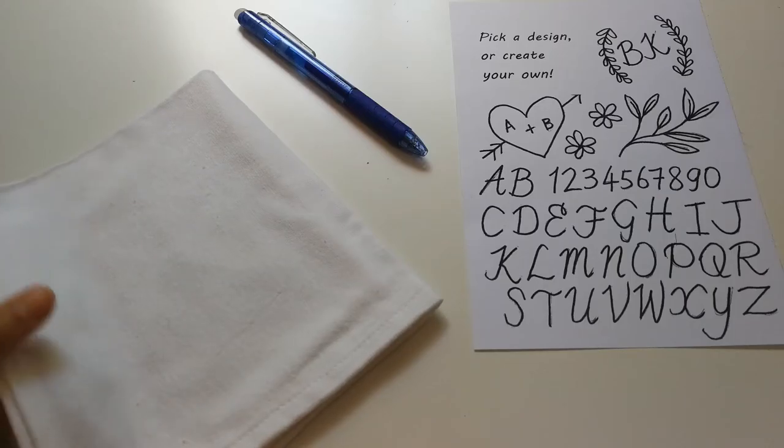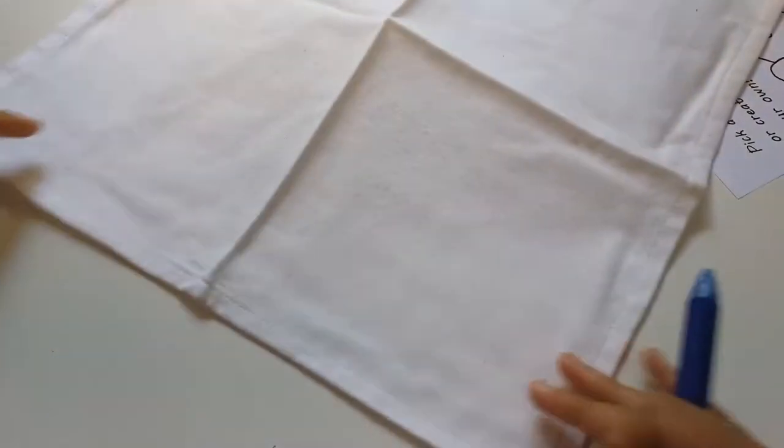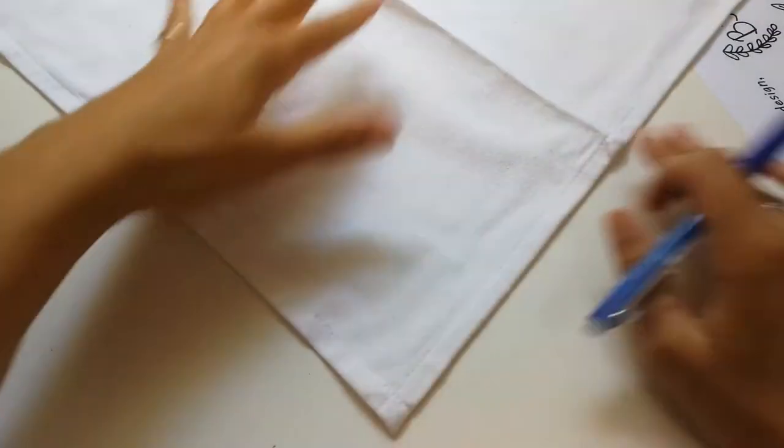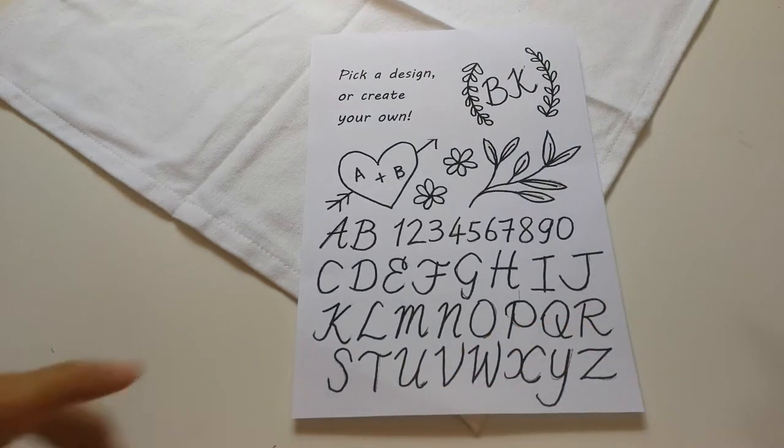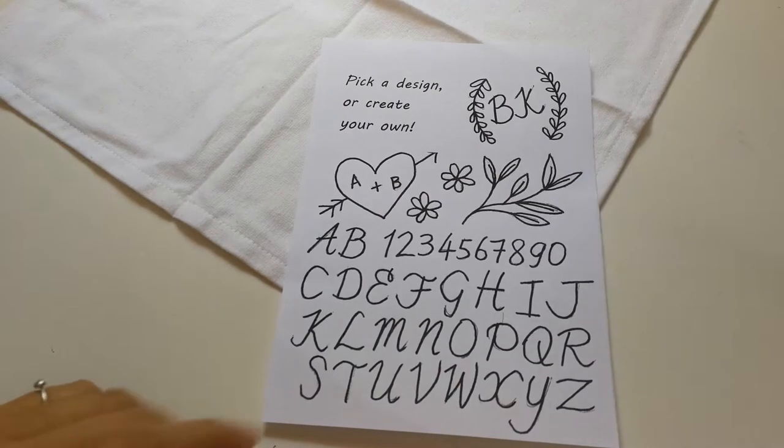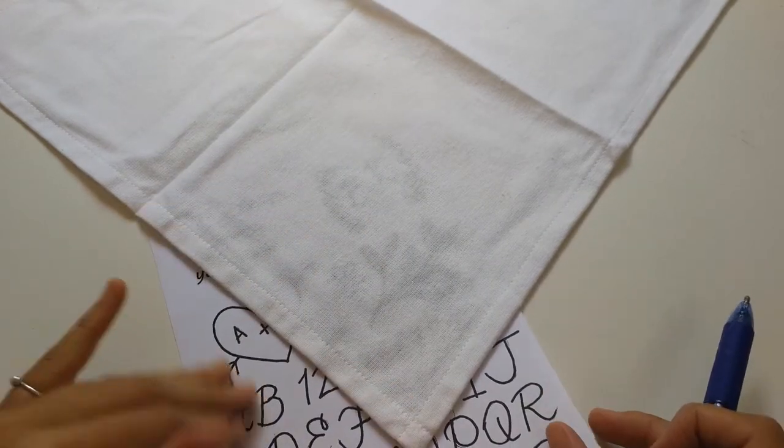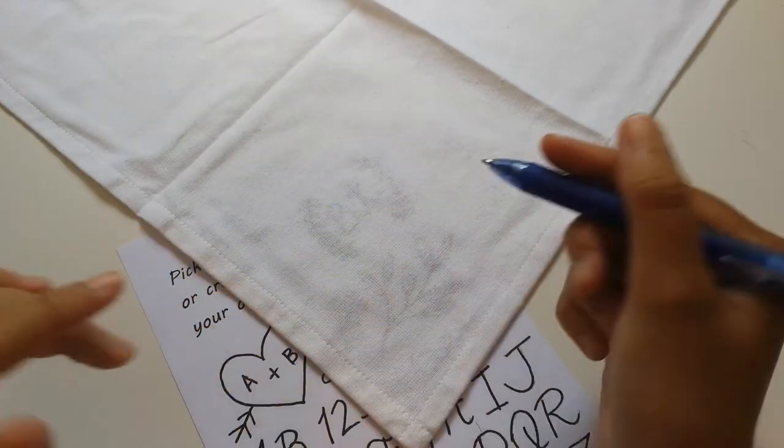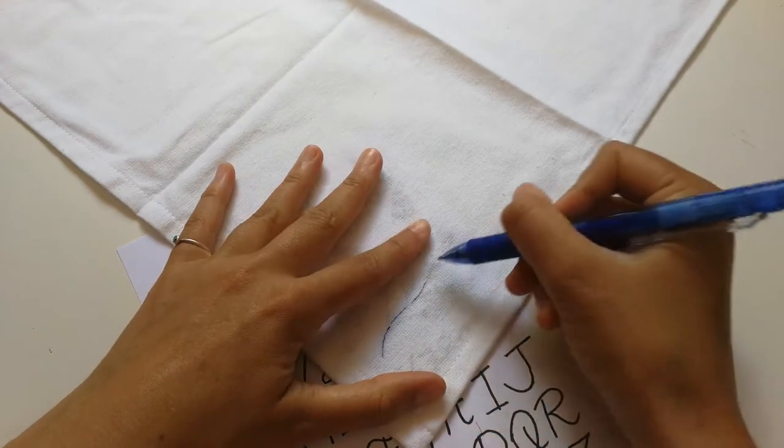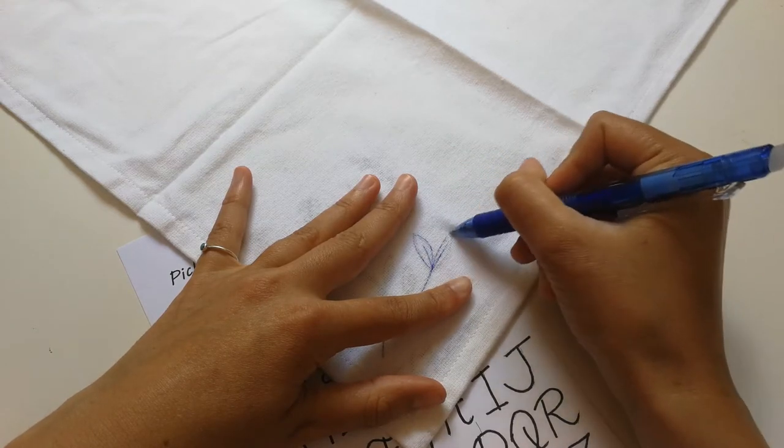First up, we're going to draw our design onto a handkerchief. Pick which corner you'd like to use. I'm going to pick this one, and then take your sheets and pick whichever design you're going to use. I'm going to use this little olive branch. Place it underneath the handkerchief, and you should be able to see through quite easily because the handkerchief is quite thin. Take your erasable pen - the ink of this pen disappears in heat, either with an iron or with a hairdryer, which makes it ideal for transferring your designs onto fabric.